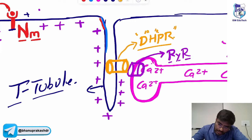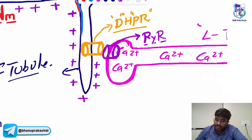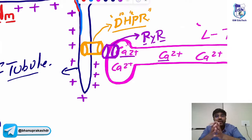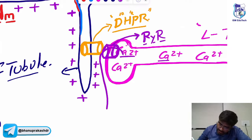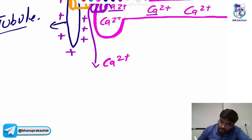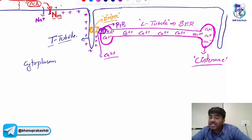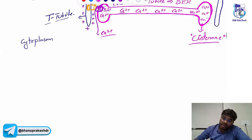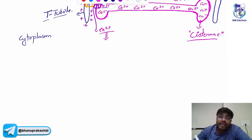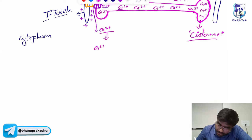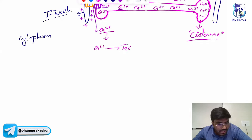The RYR channel is opened. Lots and lots of calcium is stored inside the sarcoplasmic reticulum — now the gates are open — and the calcium starts to come out into the cytoplasm. Normally calcium is not there in the cytoplasm; now it is coming in. This calcium will then bind with troponin C.